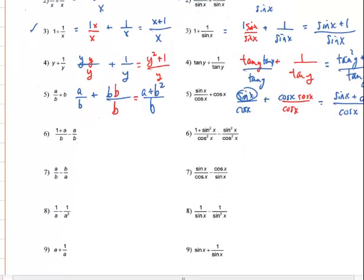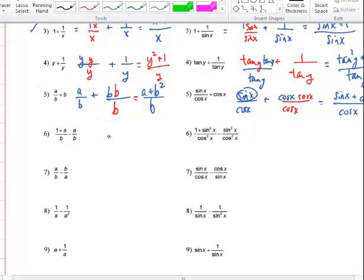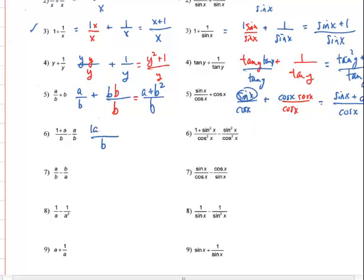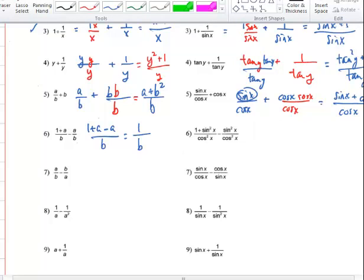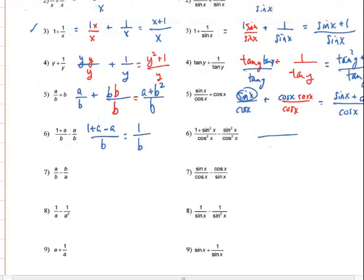This next one is easy because the denominator is b in both. All you have to do is 1 plus a from the left part minus a from the right, and you end up getting just 1 over b. On the next one, cosine squared is in the bottom of both. So you have cosine squared of x in the denominator, and you write out 1 minus sine squared of x plus sine squared of x minus sine squared of x. The sines cancel, and we have 1 over cosine squared of x.